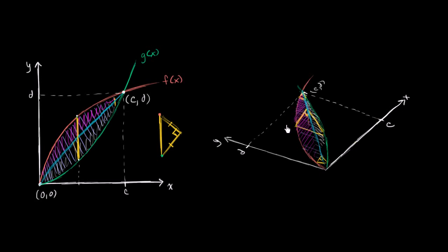What's an expression — a definite integral — that expresses the volume of this figure? I encourage you to use the fact that these functions intersect at the point zero comma zero and c comma d. So can you come up with a definite integral in terms of zeros, c's, d's, f's, and g's that describes the volume of this figure?